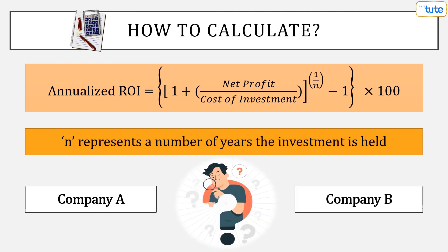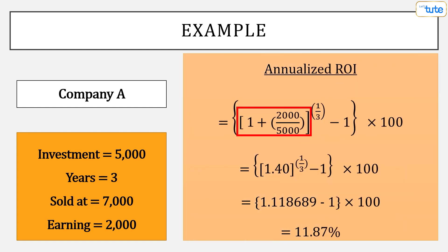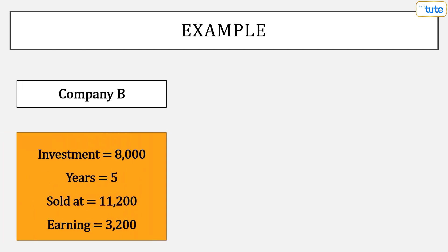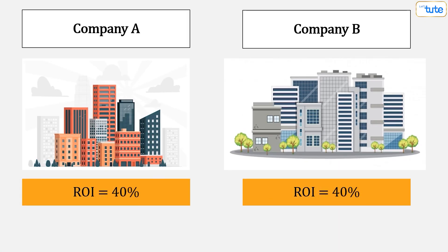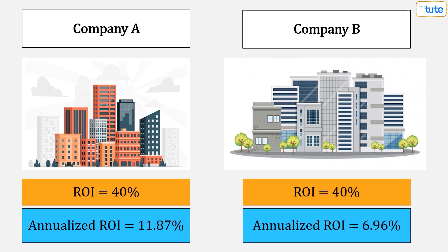Now, can you try calculating annualized return for companies A and B using this formula? Firstly, for company A: 1 plus 2000 divided by 5000, that is 40% being the ROI, raised to 1 by 3, the whole minus 1 multiplied by 100, which comes to 11.87%. And similarly, for company B, it comes to 6.96%, considering the 5 years for which the investment is held. Thus, even with the same ROIs of 40% for both companies, the investment held in company A is more profitable than company B as it has earned more returns annually.